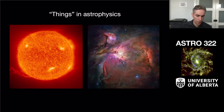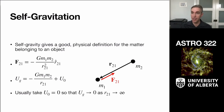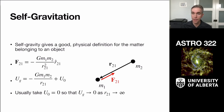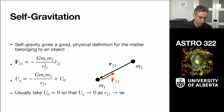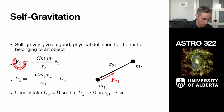Almost all of the gravitation we'll worry about in this class is standard Newtonian gravitation — we don't sweat too much about general relativity. Self-gravity is a wonderful framework for defining things, and we're going to use a form of the gravitational law that looks like this.